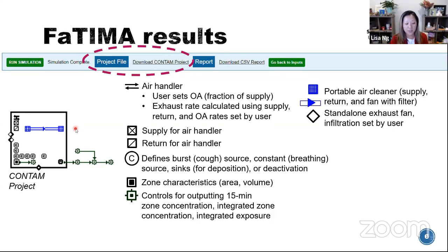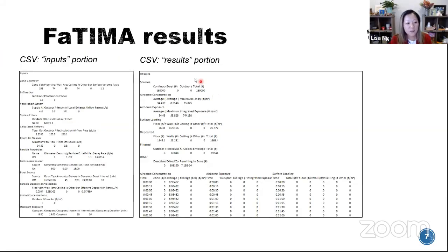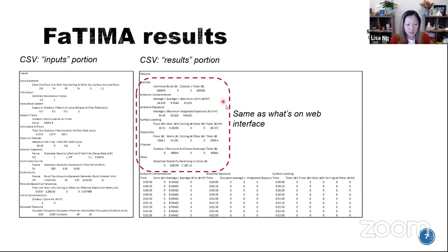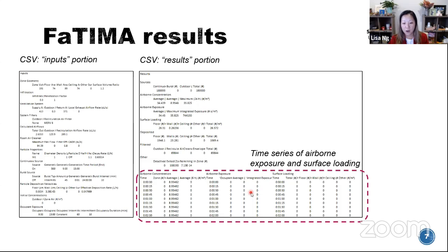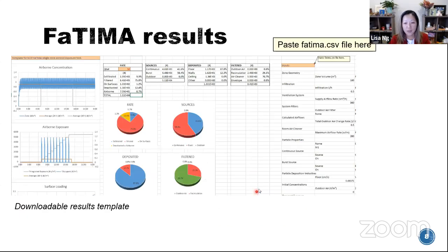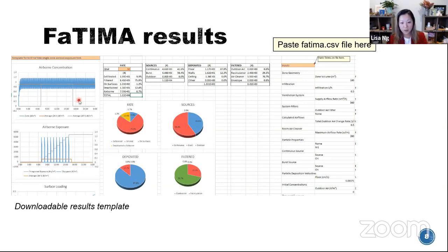If you download the CSV file, you get the summary values you saw on the web interface, plus a time series of airborne exposure and surface loading, so you can do your own plots. Also on the website is a downloadable Excel template — you can paste your results from FATIMA right in, and the template will generate those charts for you so you don't have to save a poor quality image.